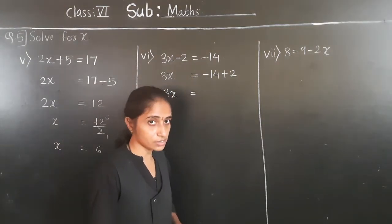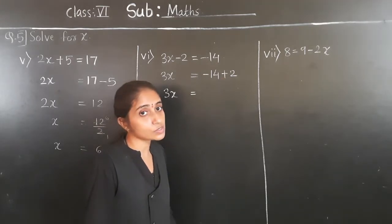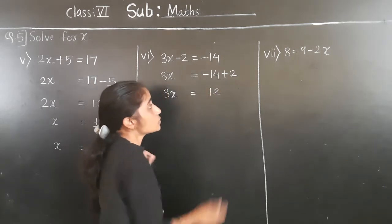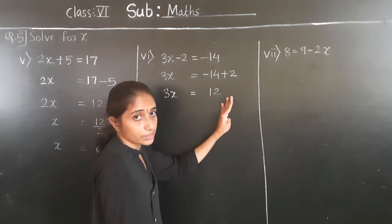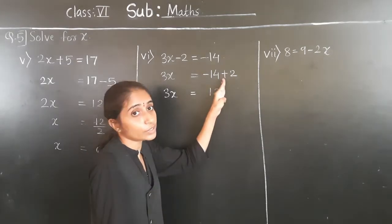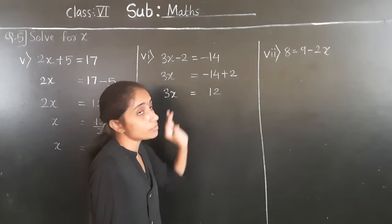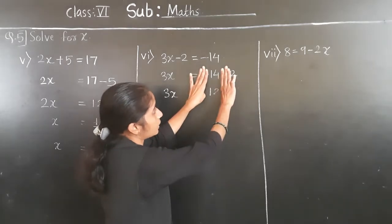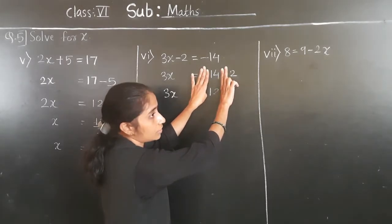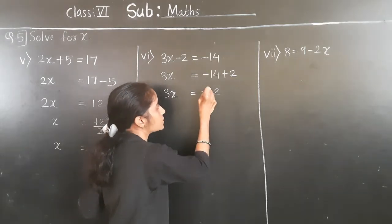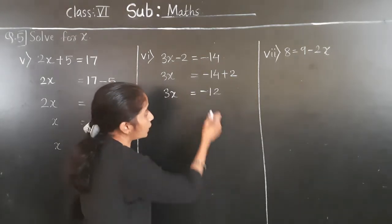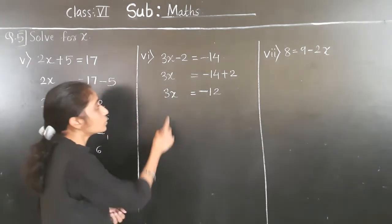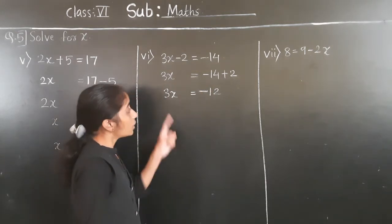So 3x is equal to minus 14 plus 2. Minus plus gives minus. Subtract 2 from 14 — we get 12. Now which is the greater number: 14 or 2? Hide the sign and check — 14 is greater, and 14 has a negative sign, so for the answer also negative sign. So 3x is equal to minus 12.